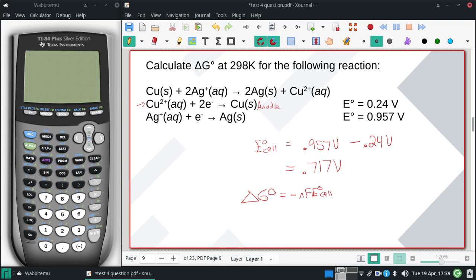So our N is gonna be the least common multiple there. So it's just gonna be two moles of electrons. Faraday's constant is 96,485. And our E° that we just calculated, 0.717.